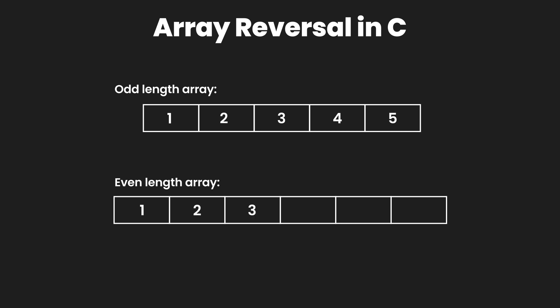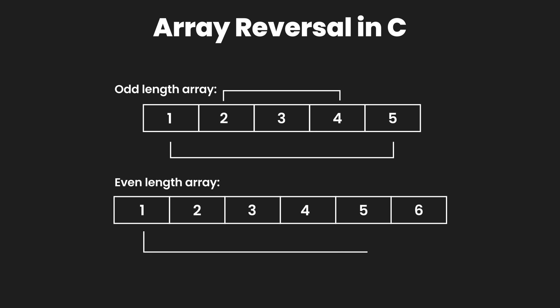If you look at your screens right now, we have an array of five elements. What we want to do is replace the first element with the last element, the second element with the second last element, and for the middle point in case of an odd length array, we don't want to swap it with anything. In case of an even length array, we swap the first value with the last, second with the second last, and the third with the fourth.